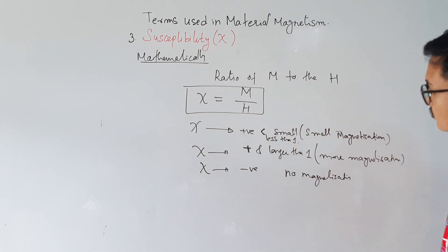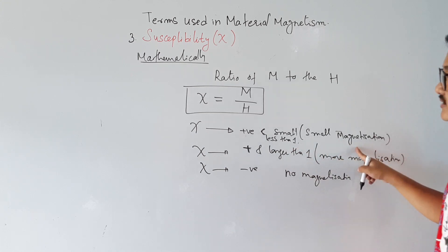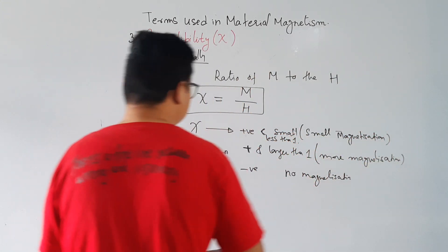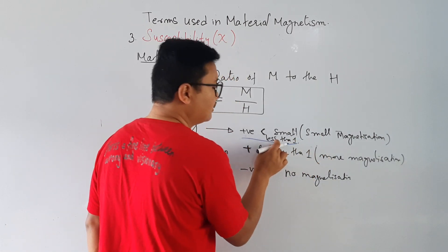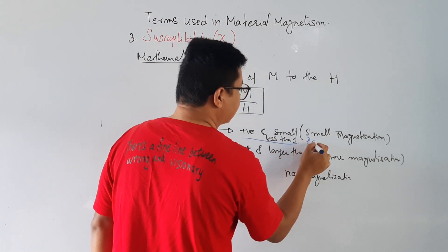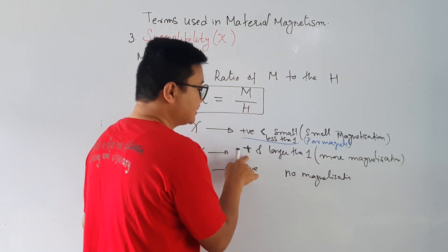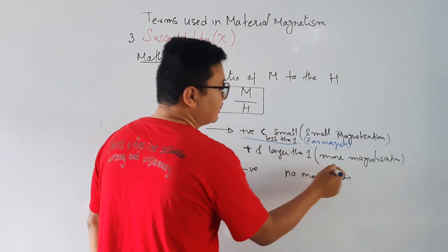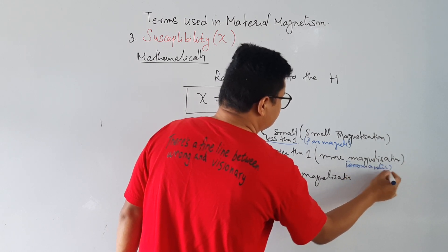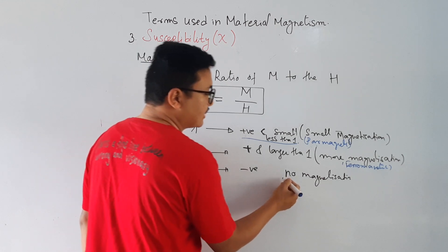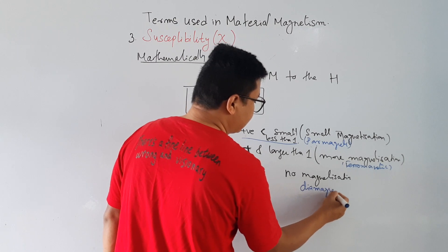So this is how we distinguish between different types of materials. If Chi is positive and small — less than one — it is paramagnetic. If Chi is positive and greater than one, it is ferromagnetic. If Chi is negative, there is no magnetization — that is diamagnetic.